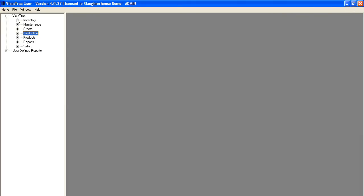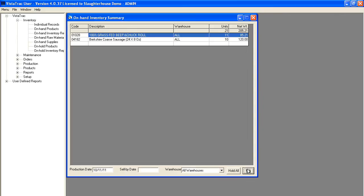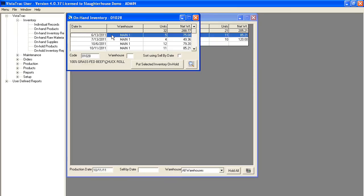You can also take a look at our inventory. We look at our on-hand products. You can select which warehouse, enter your production date 10 11 2011. Again this is everything available in the inventory that was created on this date. Here's our product here 01028. If we double click on this we can see all the cases of this product that we have available in our inventory separated by production date.